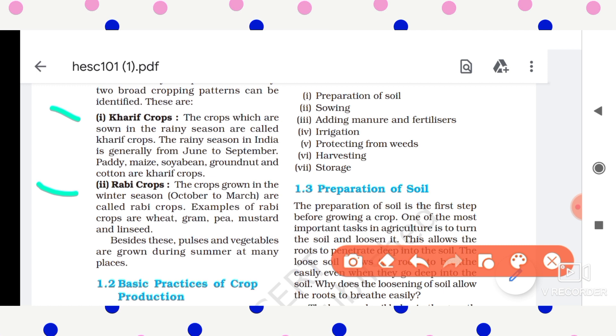Kharif crops include maize and soybean—these are some examples of kharif crops. Next is the rabi crops. The crops which are grown in the winter season are called rabi crops.